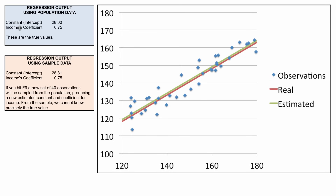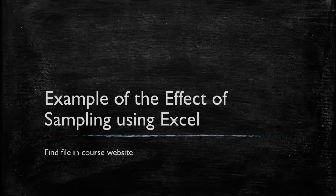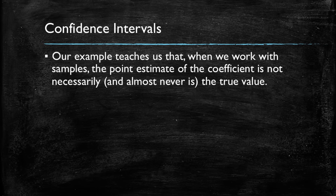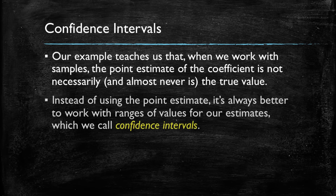Now let's go back to the theory. What did we learn from the example? Our estimates, even though in general they look similar to the real values, are not necessarily the true ones — and in fact it's almost certain they are not the true ones. We know the real value should be somewhere around a particular set of values. What we want to do is take our point estimate and construct a range of values around it. We're going to call this range of values the confidence interval.